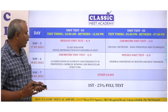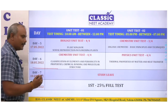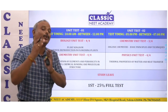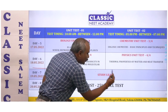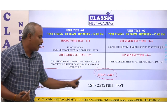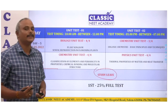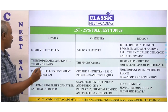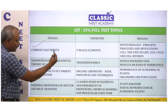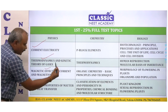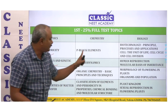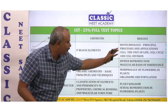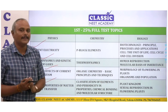After the unit tests, you will move to the 25% full test. The first 25% full test covers topics such as physics: current electricity, thermodynamics and kinetic theory, magnetic effects of current and magnetism, thermal properties; chemistry: thermodynamics, organic chemistry, classification of elements; and biology: biotechnology, and so on. You will be able to test this syllabus.